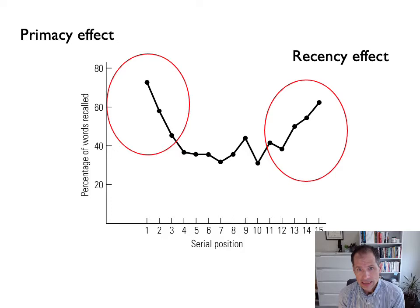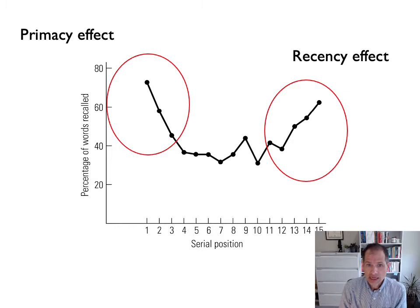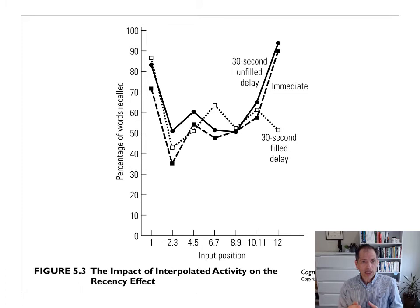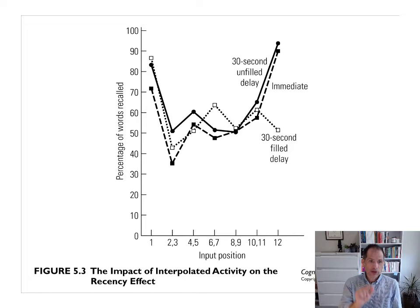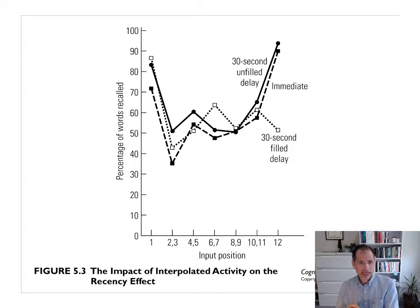Let's talk about how we can differentially affect these parts of the serial position curve. Some experimental manipulations affect the primacy effect only and leave the recency effect undamaged; others affect the recency effect and not the primacy effect. For example, suppose people hear a list of words, and then after the last word one of three things happens: in the control condition, they immediately recall the words — that's the standard serial position effect shown with the large dashed line. Or subjects wait 30 seconds and do nothing — they hear the words, try to memorize them, 30 seconds passes, then they recall.